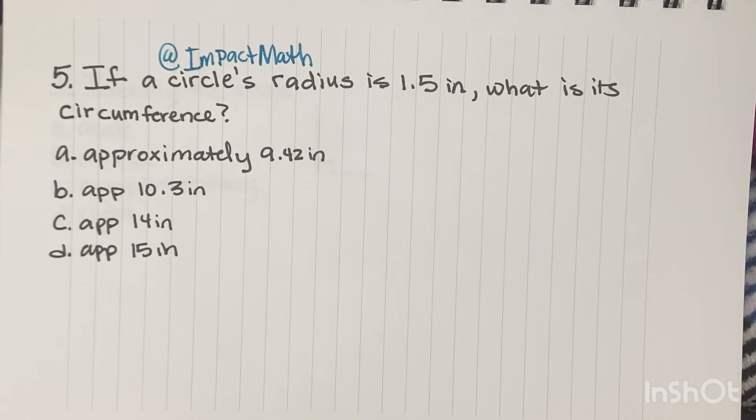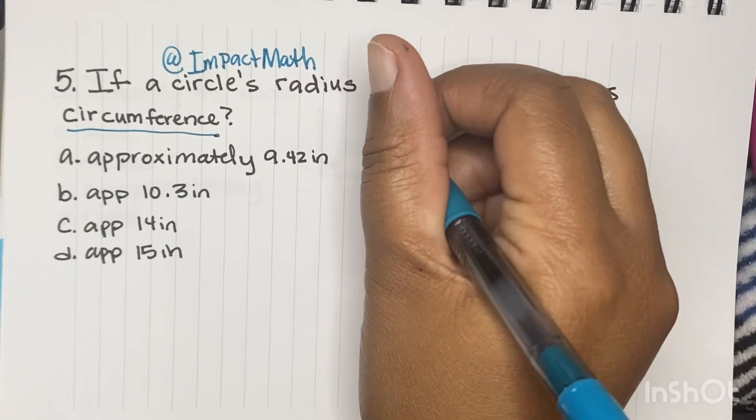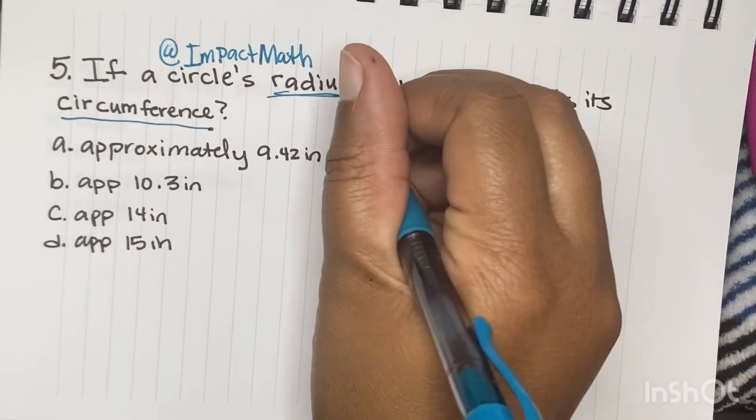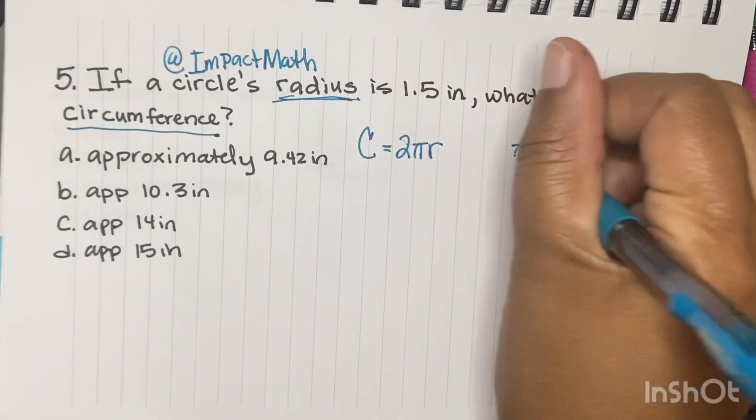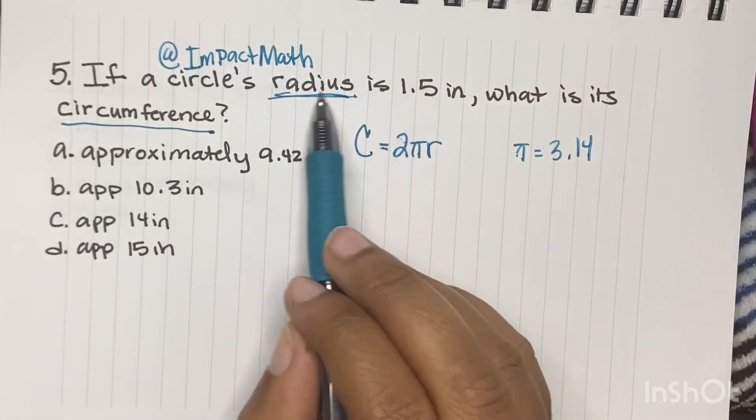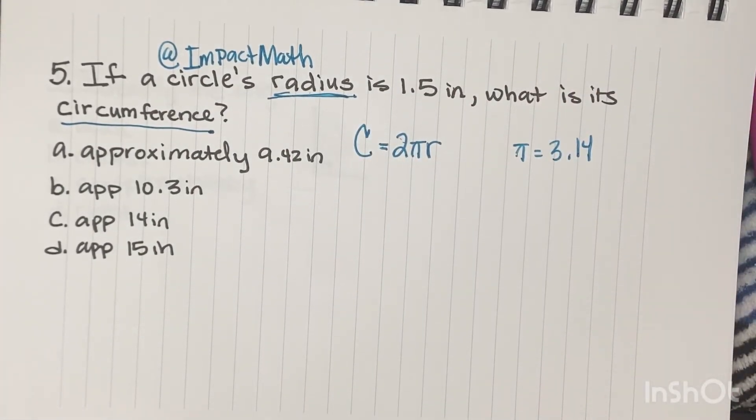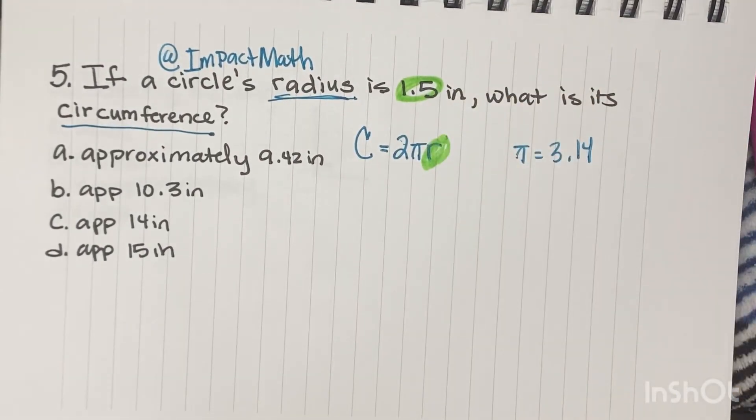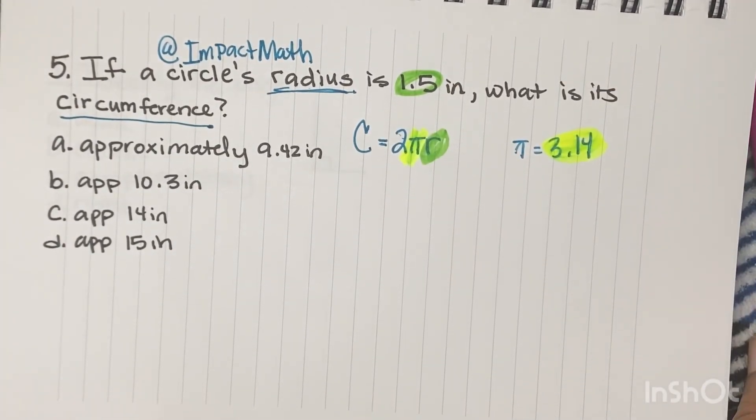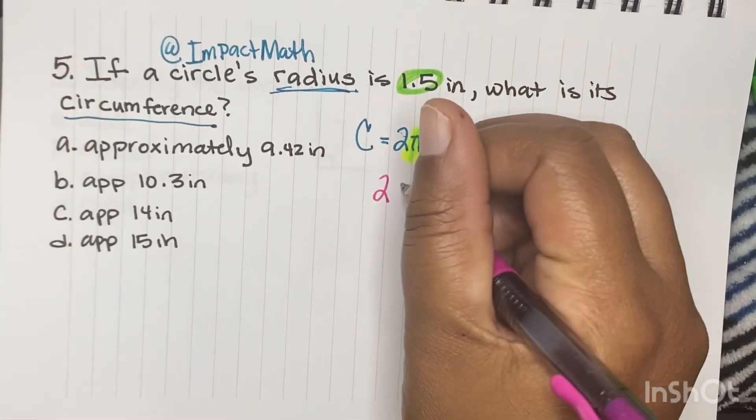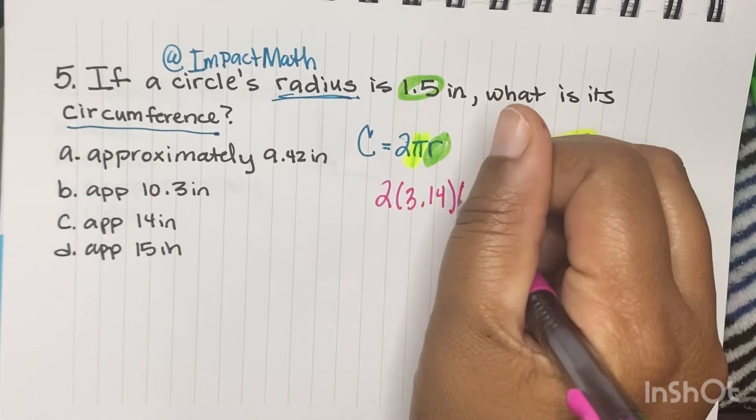If a circle radius is 1.5 inches, what is its circumference? So again, we are finding circumference. They gave us the radius. So we're using C equals 2 times pi times r. Pi is equal to 3.14. And they told us our radius here was 1.5. So we're going to plug both of those numbers into our formula.